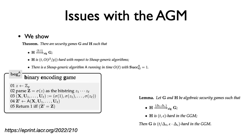In our paper, we show a counterexample to the claim in the 2018 paper. The counterexample is called the binary encoding game. More issues of the algebraic group model can be found in our paper.